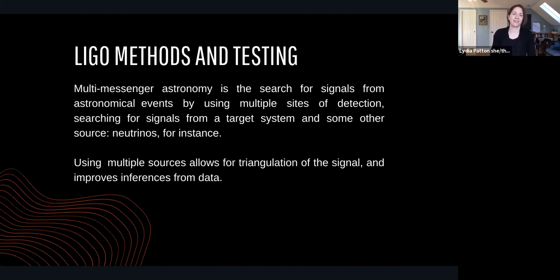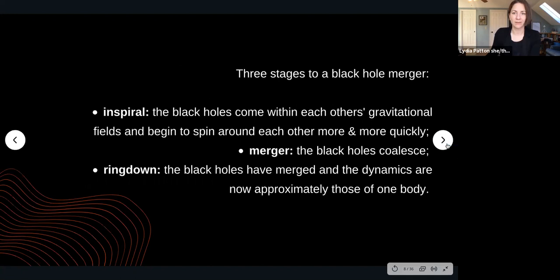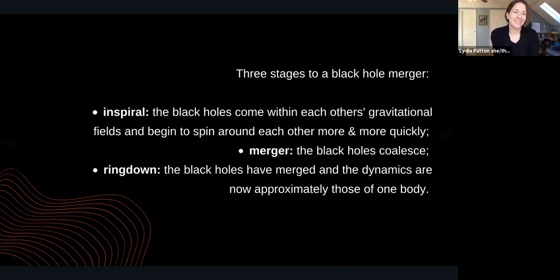I want to say something quickly about the methods used by the LIGO collaboration. Multi-messenger astronomy is the search for signals from astronomical events using multiple sites of detection, searching for signals from a target system from some other source. The use of multiple sources allows for triangulation of the signal and improves inferences from data. LIGO is well known for having investigated black hole mergers, merges of black holes and neutron stars, neutron star mergers, and also recently objects in the mass gap — sometimes referred to as mystery objects.